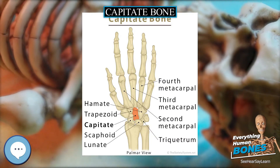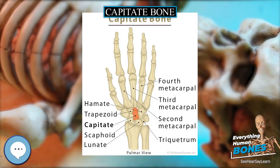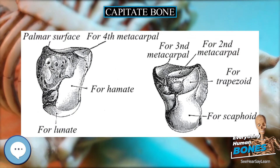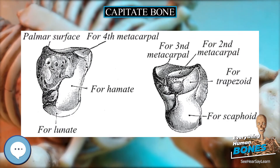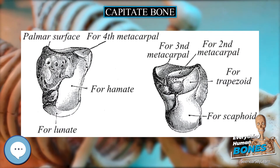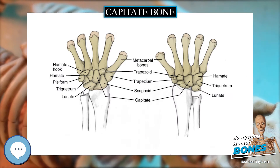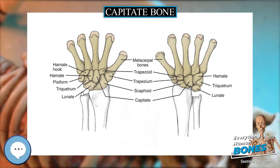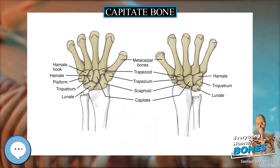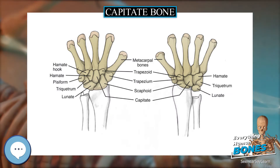The medial surface articulates with the hamate bone by a smooth, concave, oblong facet, which occupies its posterior and superior parts. It is rough in front, for the attachment of an interosseous ligament.